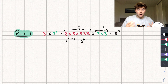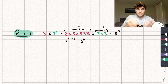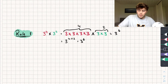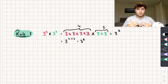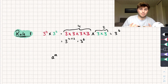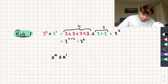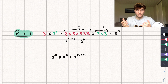This rule of adding the powers only works if our bases are the same — here the base is 3 for both. The general rule is: if we have A to the power of M multiplied by A to the power of N, then that equals A to the power of M plus N.